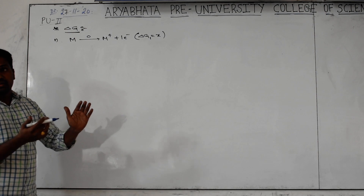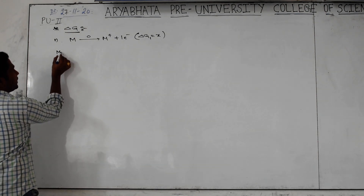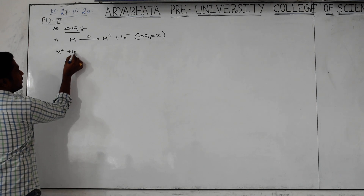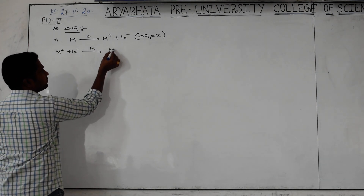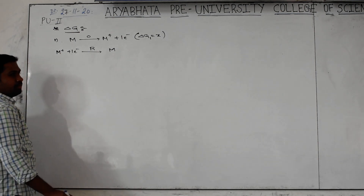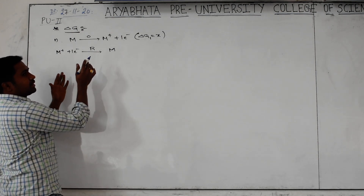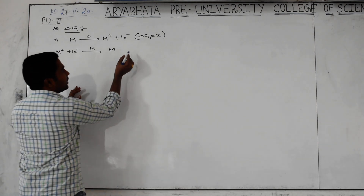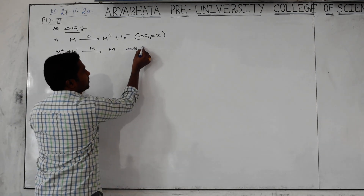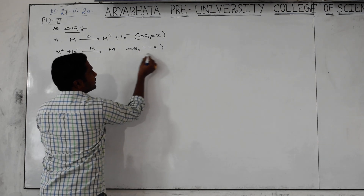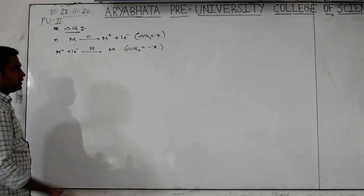Now, if you take the reverse — means reduction — M plus particle will receive one electron; that process is called reduction, and it is becoming metal in solid form. It is a reduction. Now, oxidation and reduction are quite opposite. That is why delta G2 value is not equal to delta G1; it should be becoming minus X. Yesterday we have seen already this one.